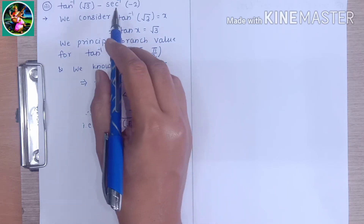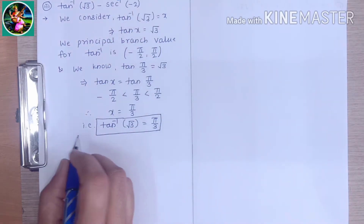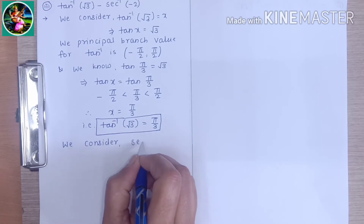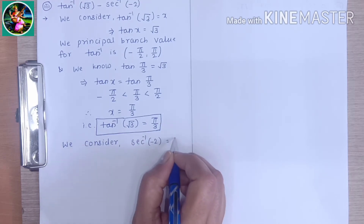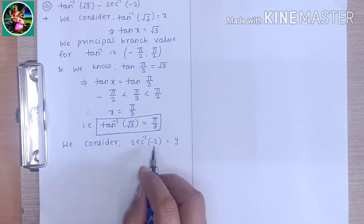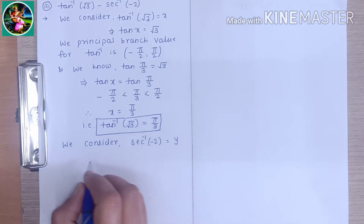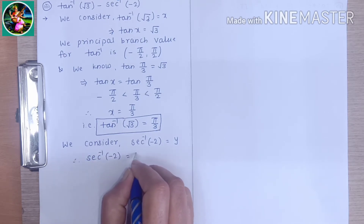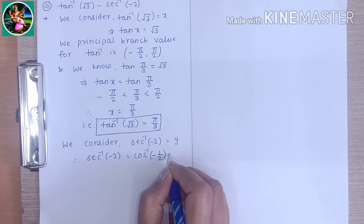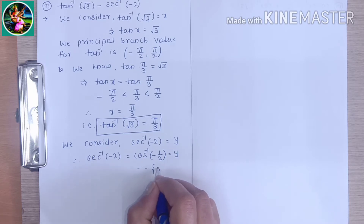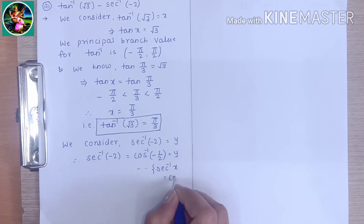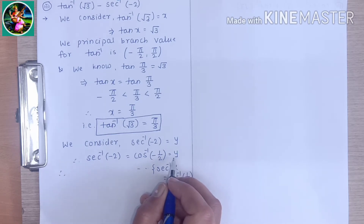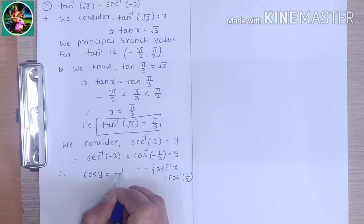Now we calculate the value for sec inverse of minus 2. We consider sec inverse of minus 2 equals y. By the property that sec inverse of x equals cos inverse of 1/x, we write sec inverse of minus 2 equals cos inverse of minus 1/2, which equals y. This gives cos y equals minus 1/2.